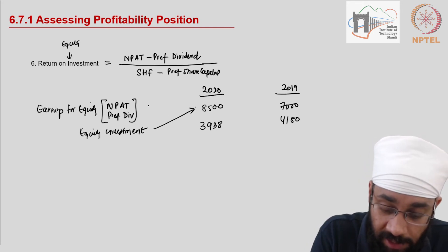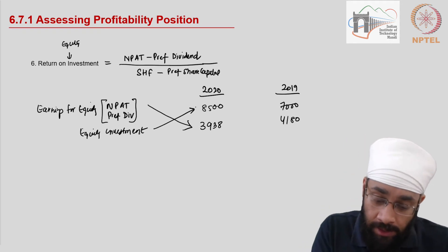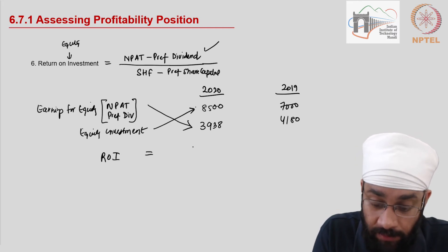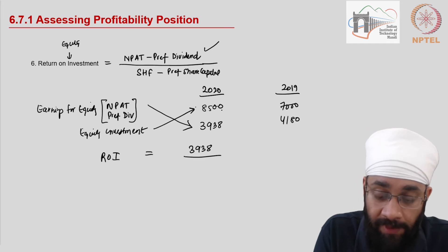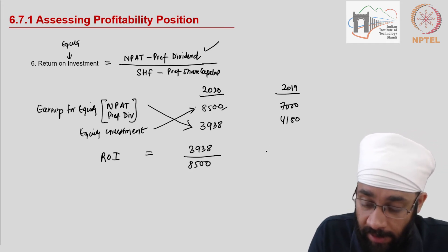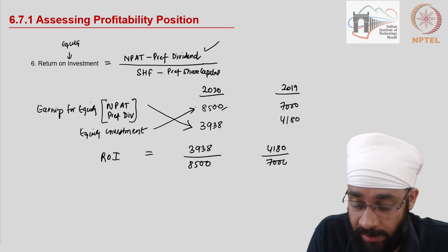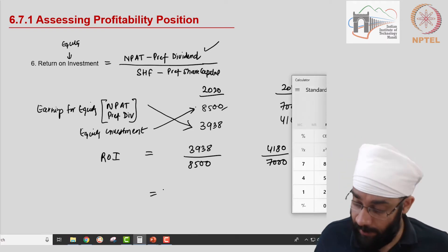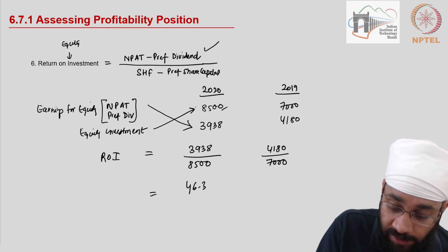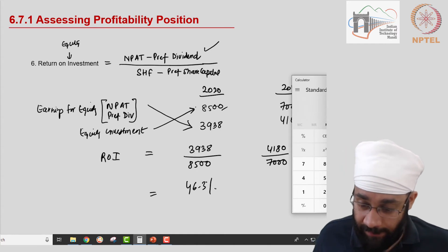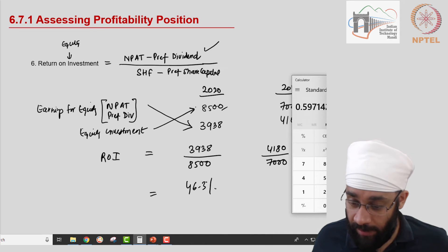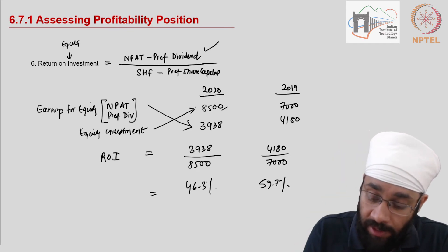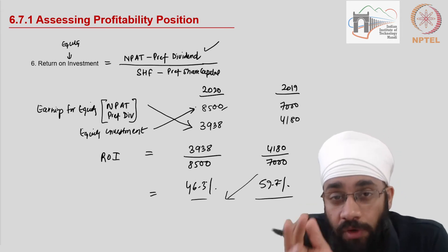Now calculating Return on Investment: earnings available divided by equity investment. For 2020: three thousand nine hundred and thirty-eight divided by eight thousand five hundred equals forty-six point three percent. For 2019: four thousand one hundred and eighty divided by seven thousand equals fifty-nine point seven percent. Equity shareholders last year earned about sixty percent return, which has gone down to only forty-six percent this year.